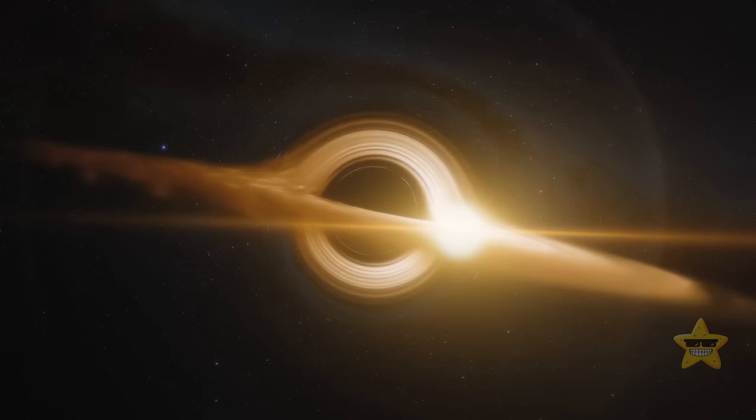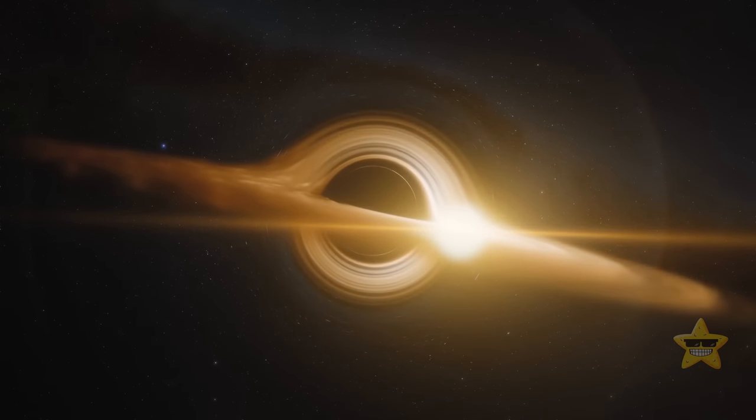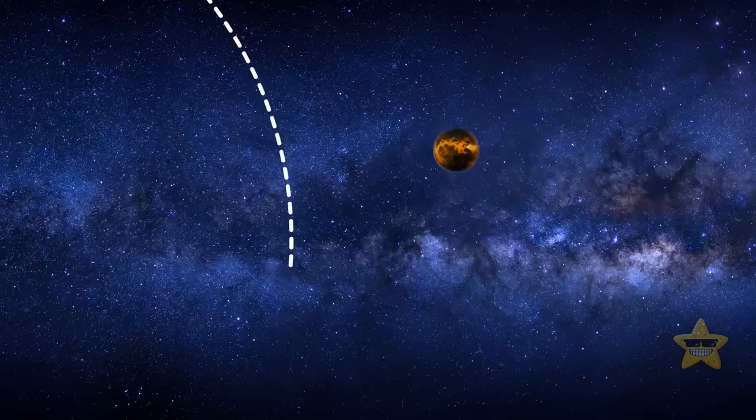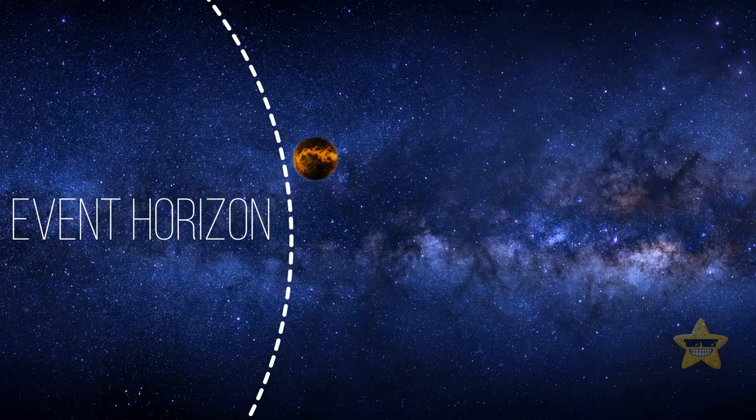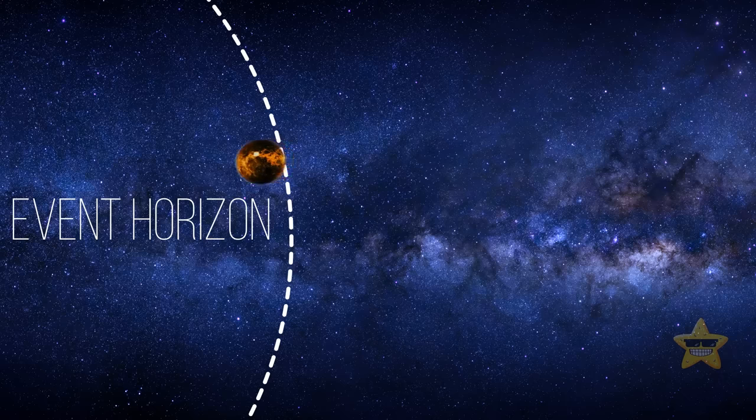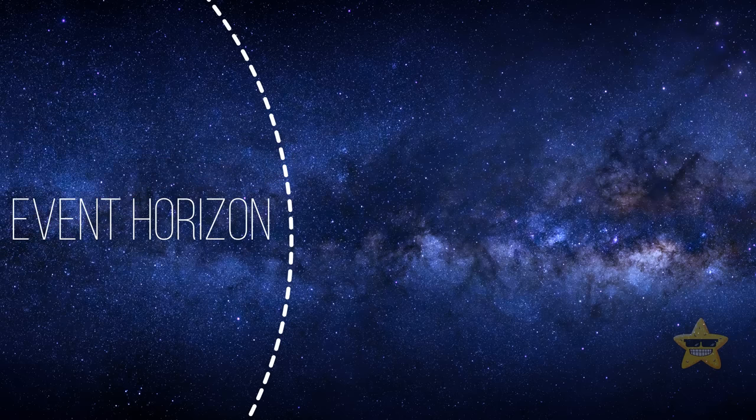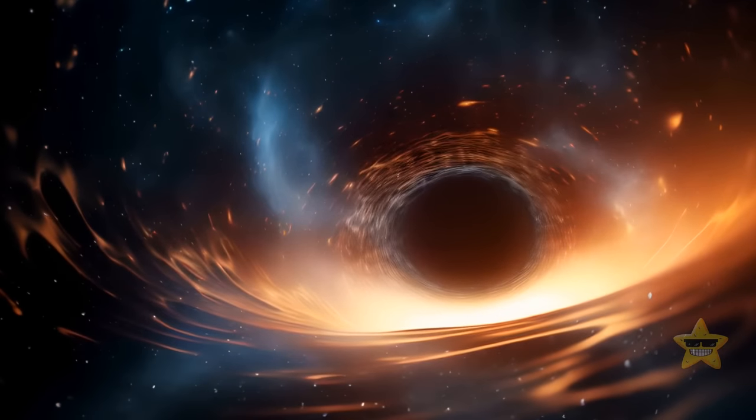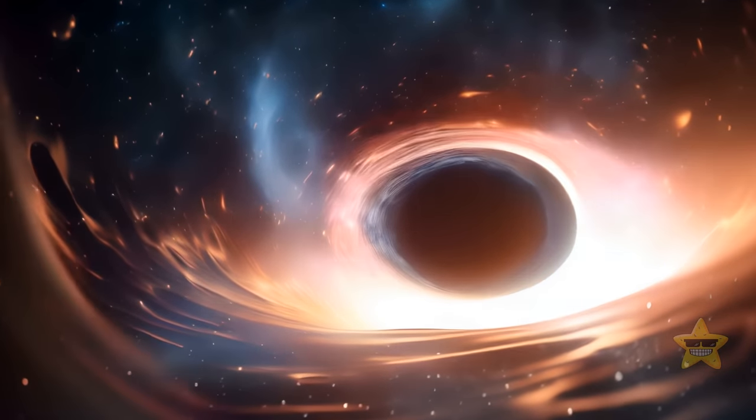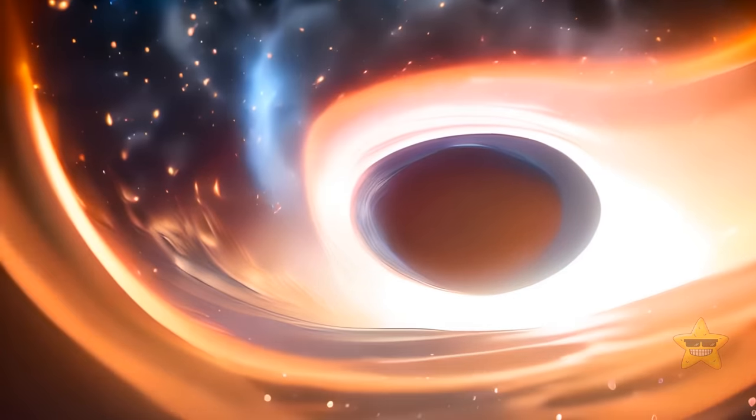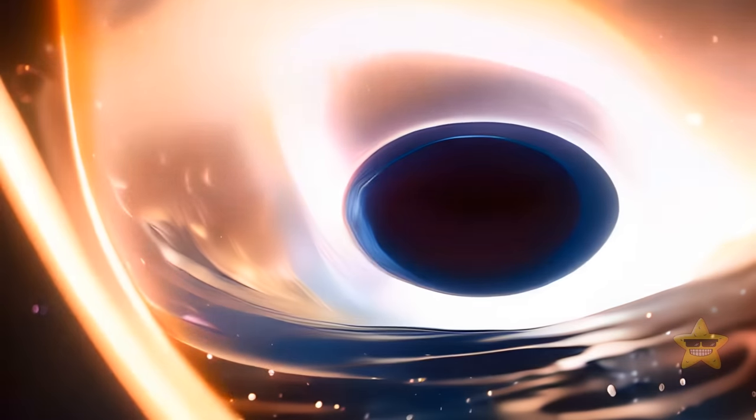The event horizon is a point of no return on the outskirts of a black hole. When something, for example matter, radiation, or light reaches this boundary, there is no way for it to escape. We can use the event horizon to estimate the size of the black hole. The larger it is, the more massive the black hole you've come across is.